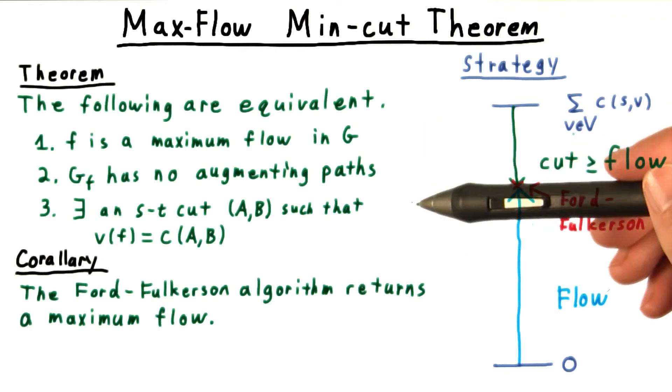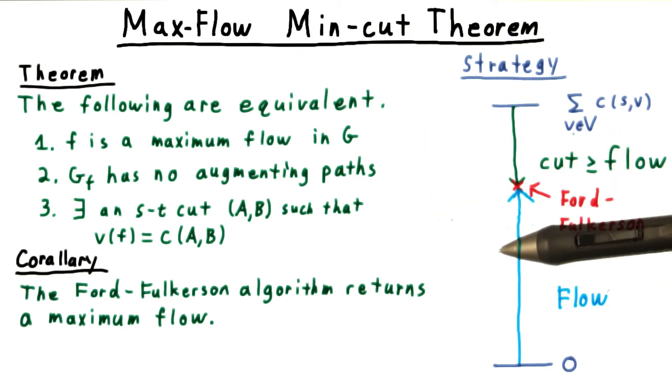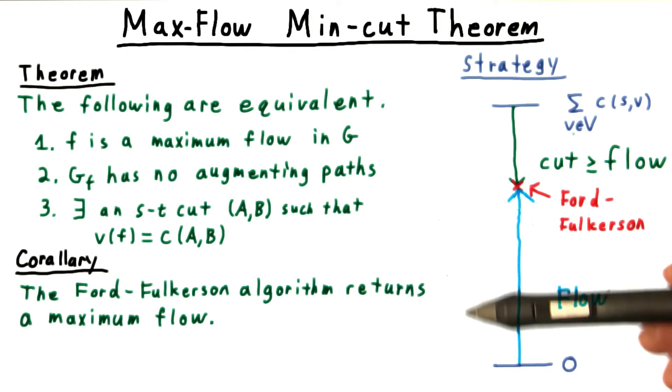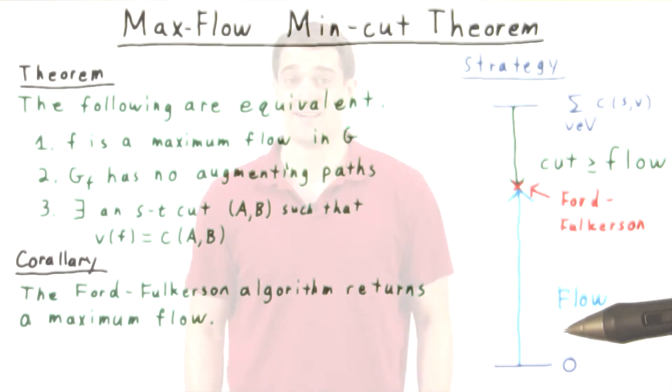These three things are equivalent: maximum flow is equal to minimum capacity cut, and the Ford-Fulkerson approach returns a maximum flow. If you followed all that, congratulations. The max-flow min-cut theorem is one of the classic theorems in the study of algorithms, and a wonderful illustration of duality, which we'll discuss in a later lesson.